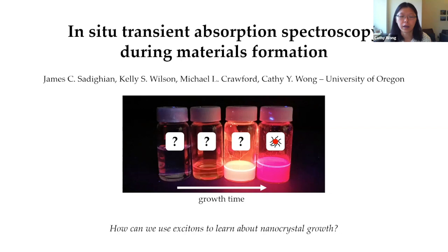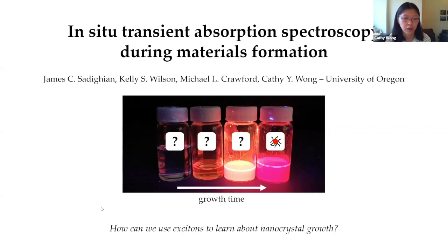When people do measure these materials spectroscopically, typically they're only measuring nanocrystals that are fully grown, well capped by a shell, usually of organic ligands, and really stable. Because of that, we don't actually know what's going on during the synthesis or how the photophysics change. Each of these four vials contains a sample of nanocrystals at various stages during growth, but for the most part, we only know what's happening in that final vial.